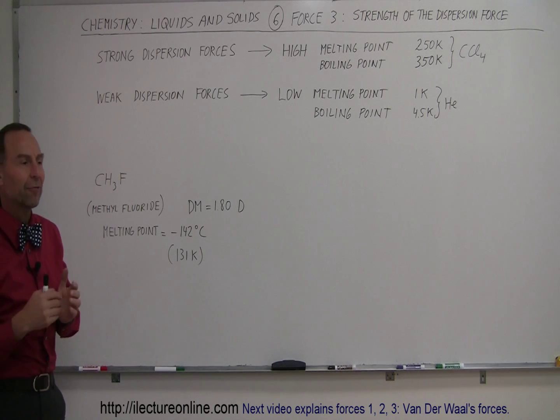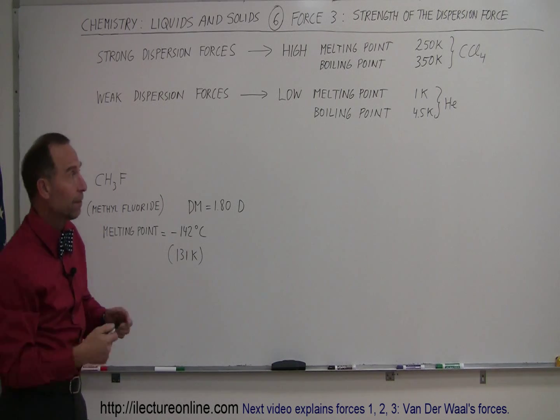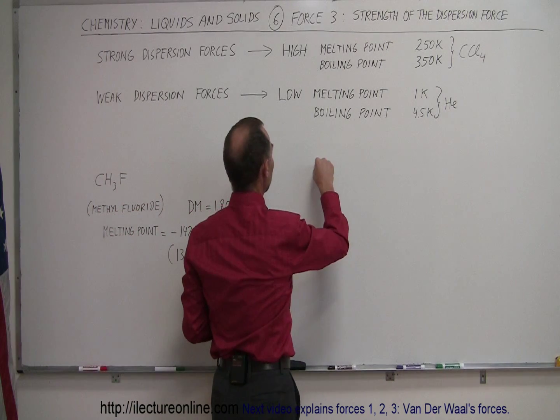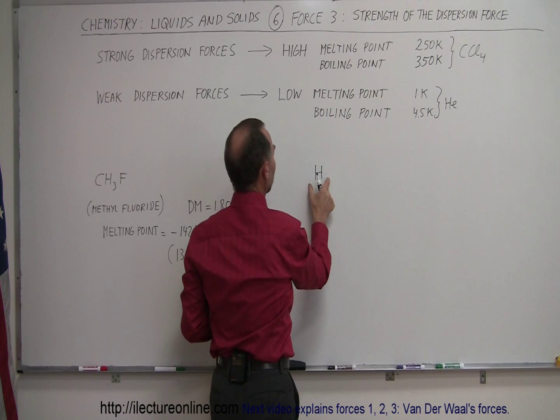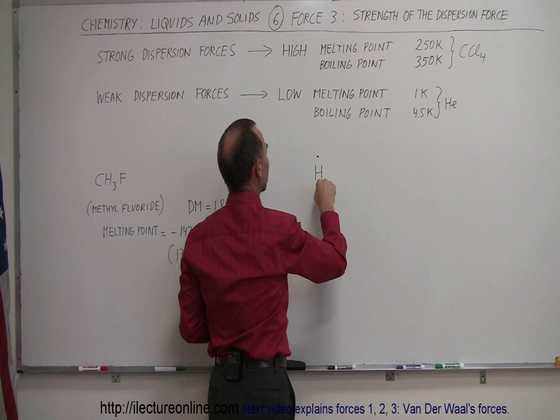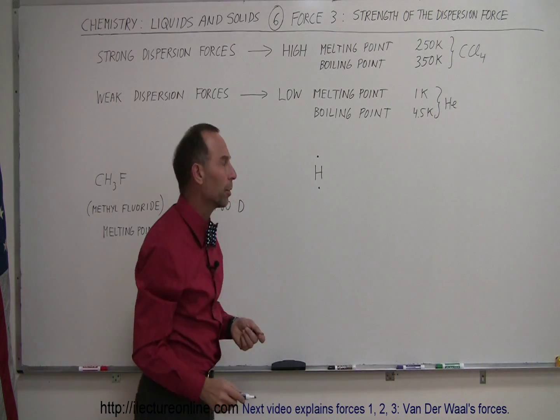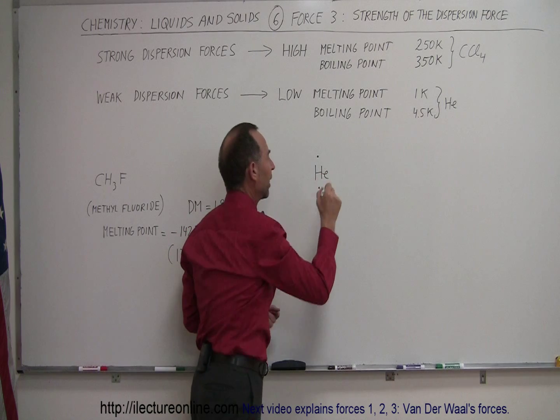And here we're talking about molecules that have no particular polarization to begin with, for example helium. Helium is simply a nucleus that's positively charged with two electrons, and electrons are equally distributed in the 1s orbital.